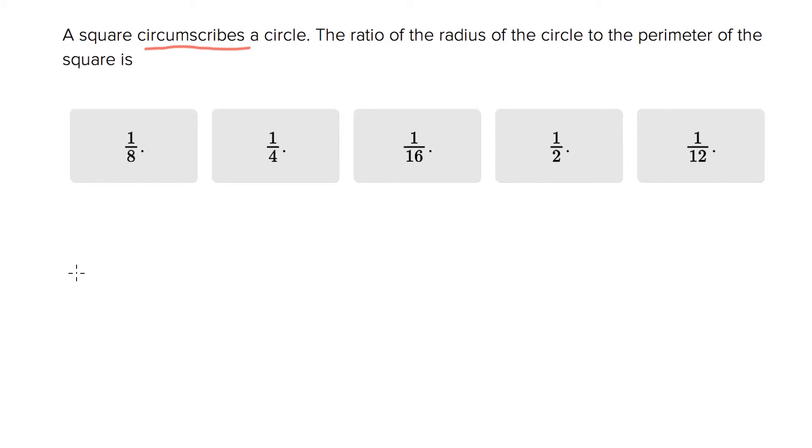So a square circumscribing a circle would look like this. Here's your circle, and here is the square circumscribing it, where it should touch right there. So that is a square circumscribing a circle.